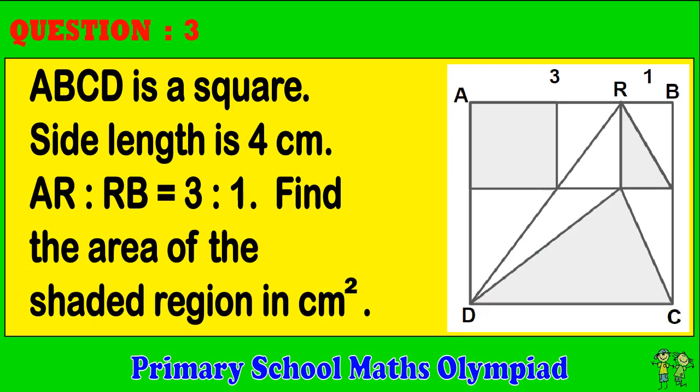Question 3: ABCD is a square. Side length is 4 centimeters. AR to RB equals 3 to 1. Find the area of the shaded region in centimeters squared.